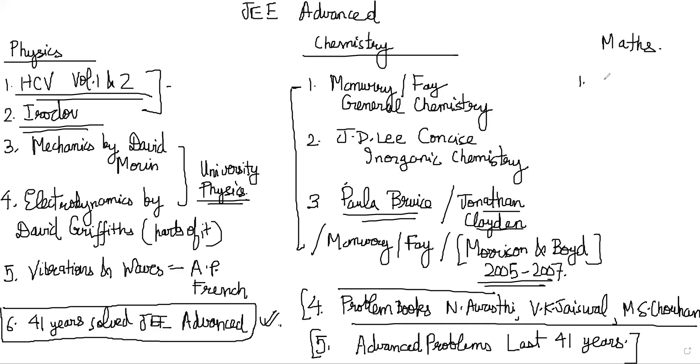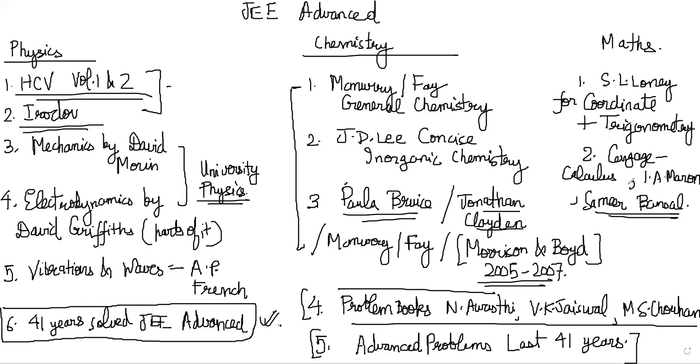For maths, things are fairly simple here. SL Loney for coordinate and trigonometry. Coordinate geometry plus trigonometry. For calculus, there are multiple options. You can do Cengage for calculus by G. Tewani. Or you should do I.A. Maron Problems in Calculus in One Variable. And you can also go through Amit M. Agarwal's problems in calculus book. That is good. So these are books that will be enough for the calculus section.